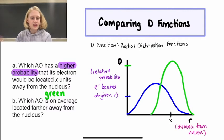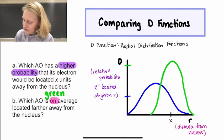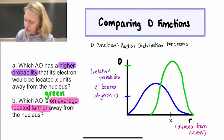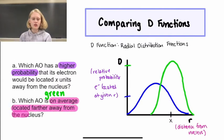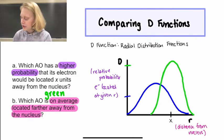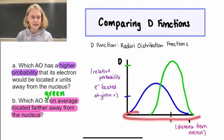So the next question asks which AO is on average located farther away from the nucleus. So if we're asked about distance from the nucleus, that means we're going to be comparing values along the horizontal axis.